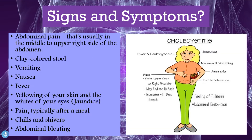Now let's talk about some signs and symptoms of cholecystitis. If the gallbladder is enlarged and inflamed and there is a blockage in the cystic duct so bile isn't able to drain out, the patient will have pain. Usually the first symptom is abdominal pain, located in the middle to upper right side of the abdomen because that is where the gallbladder is situated.